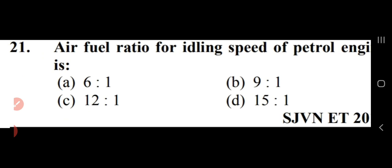Air-fuel ratio for idling speed of a petrol engine. The options are 6:1, 9:1, 12:1, or 15:1. The right answer is 12:1, that is option C.